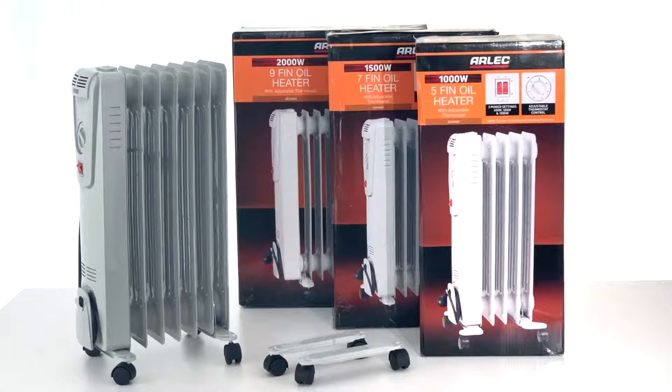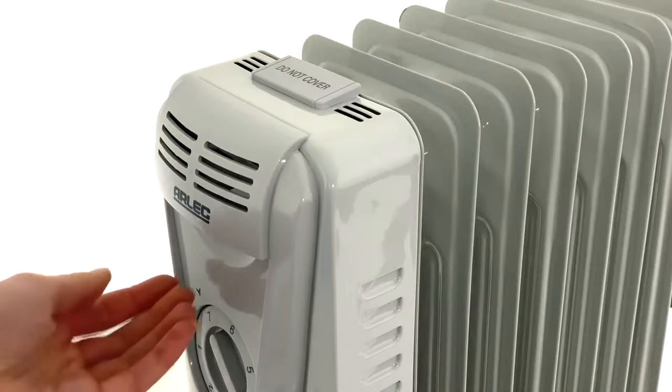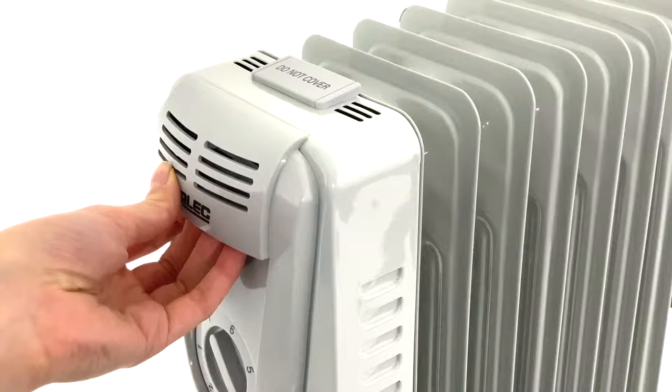Fin oil heaters have attachable and detachable caster wheels. To assemble, with the heater switched off and unplugged, turn the heater upside down using the carry handle.